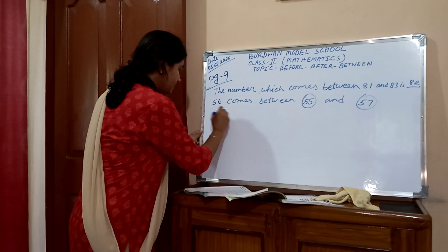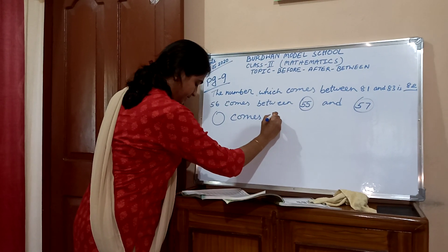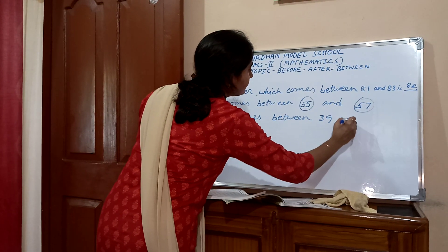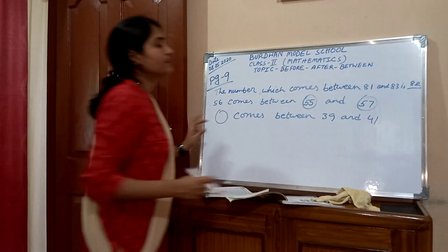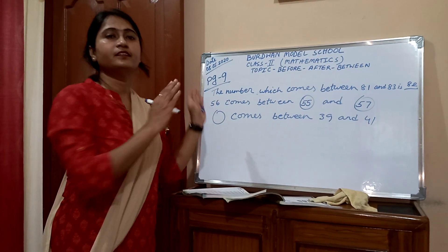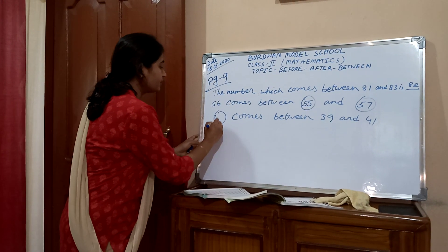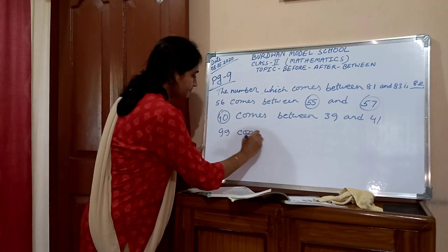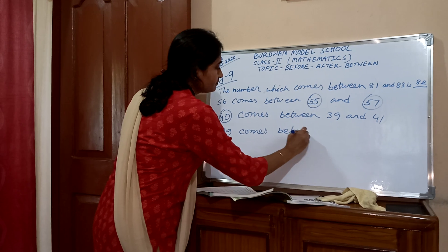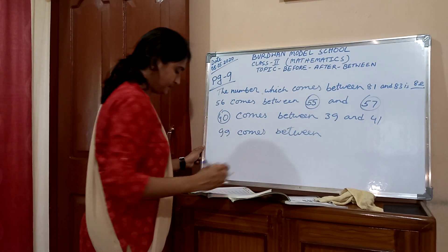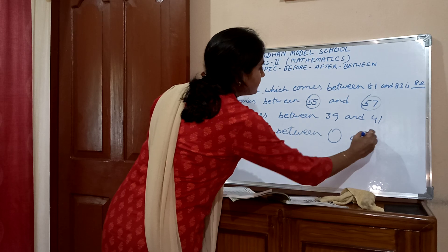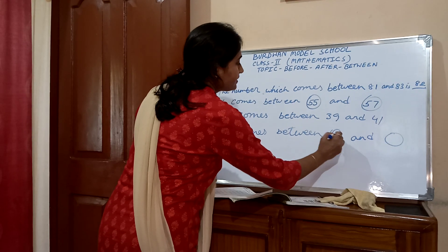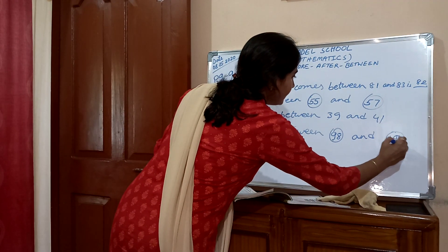Dash comes between 39 and 41. What is the between number of 39 and 41? 39, 40, 41 — the between number is 40. Now, 99 comes between dash and dash — 99 comes between 98 and 100.